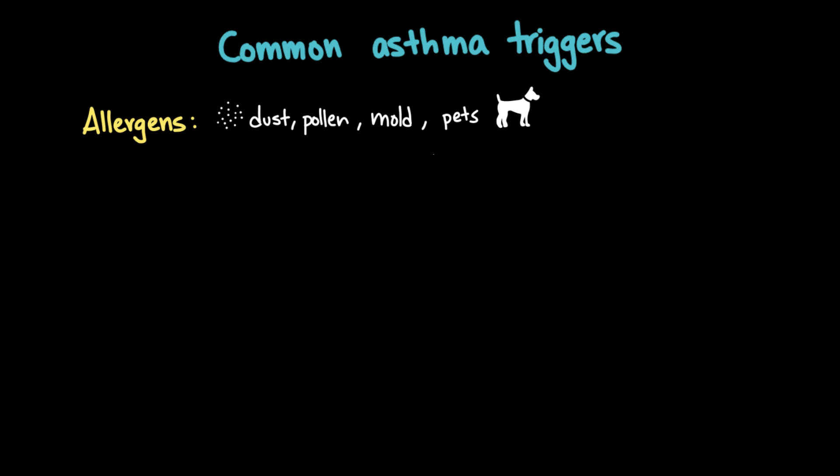Asthma attacks don't happen out of nowhere. They are usually set off by specific triggers. These triggers can vary widely between individuals, but there are some common ones that can provoke asthma attacks. Allergens, like dust mites, pollen, mold, or even pet dander.